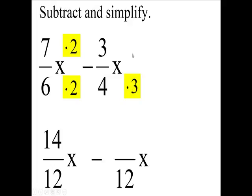And then you're going to take three times four is 12, three times three is nine. And then we're going to get another like fraction by subtracting 14 minus nine, which is five. Final answer: five-twelfths x.